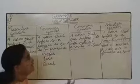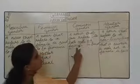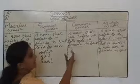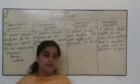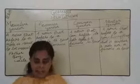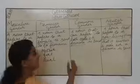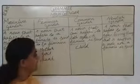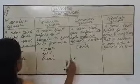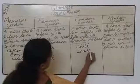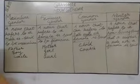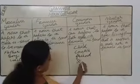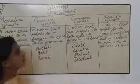Common gender noun — this is a noun that can refer to both male or female, and is said to be a common gender noun. For example, 'child' — we can't know if it is a boy or girl. Other examples are: cousin, friend, and student. These are the examples of common gender noun.